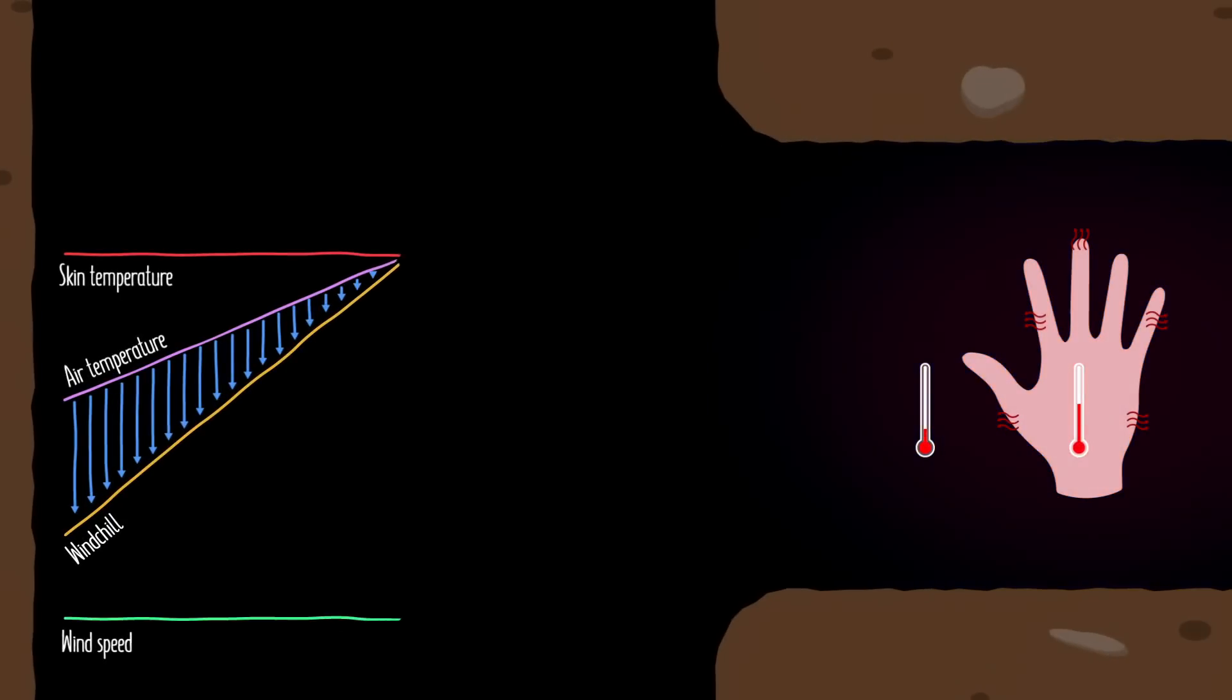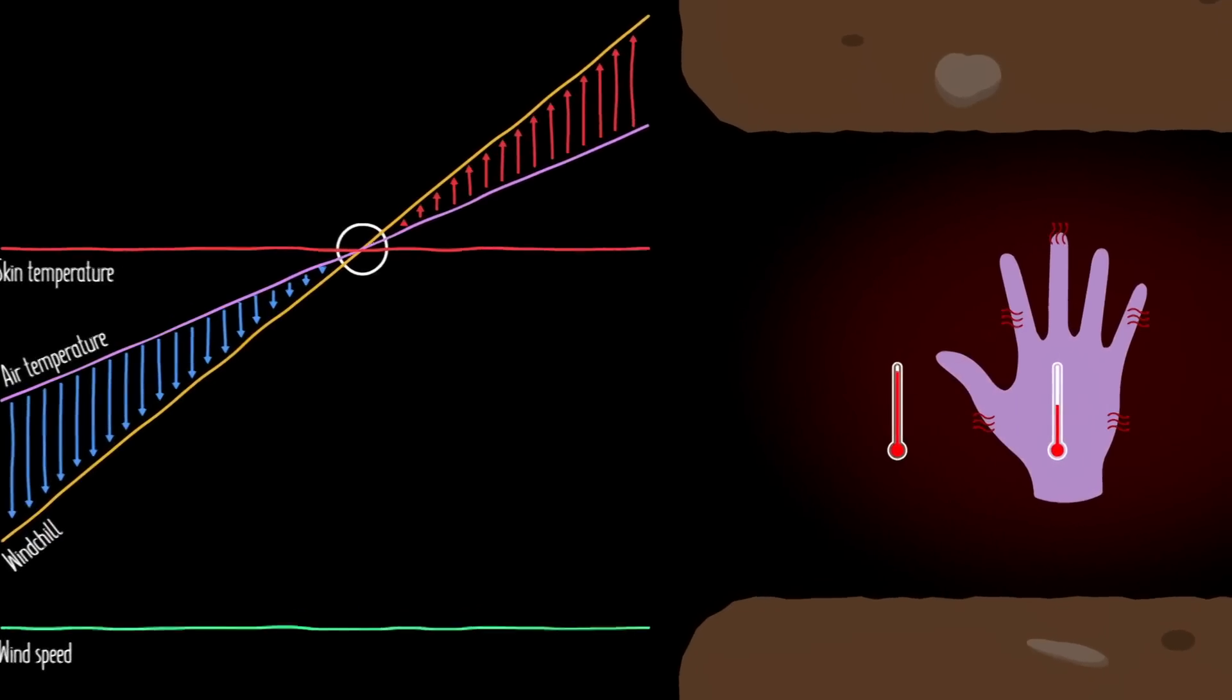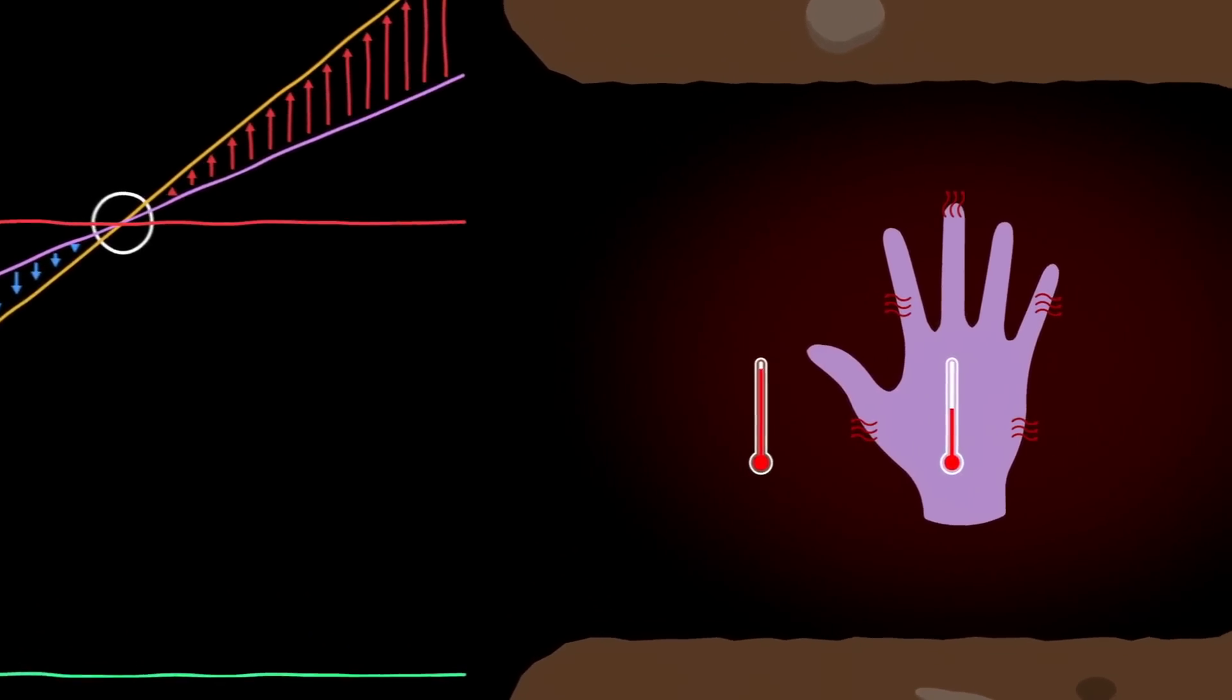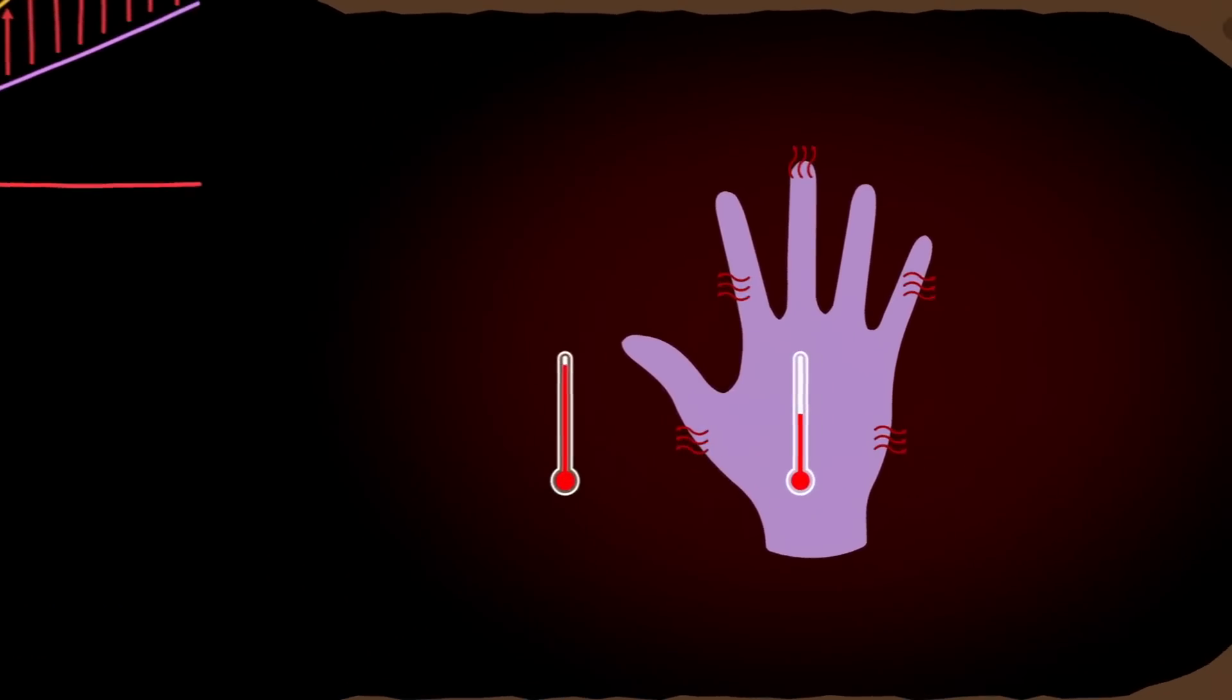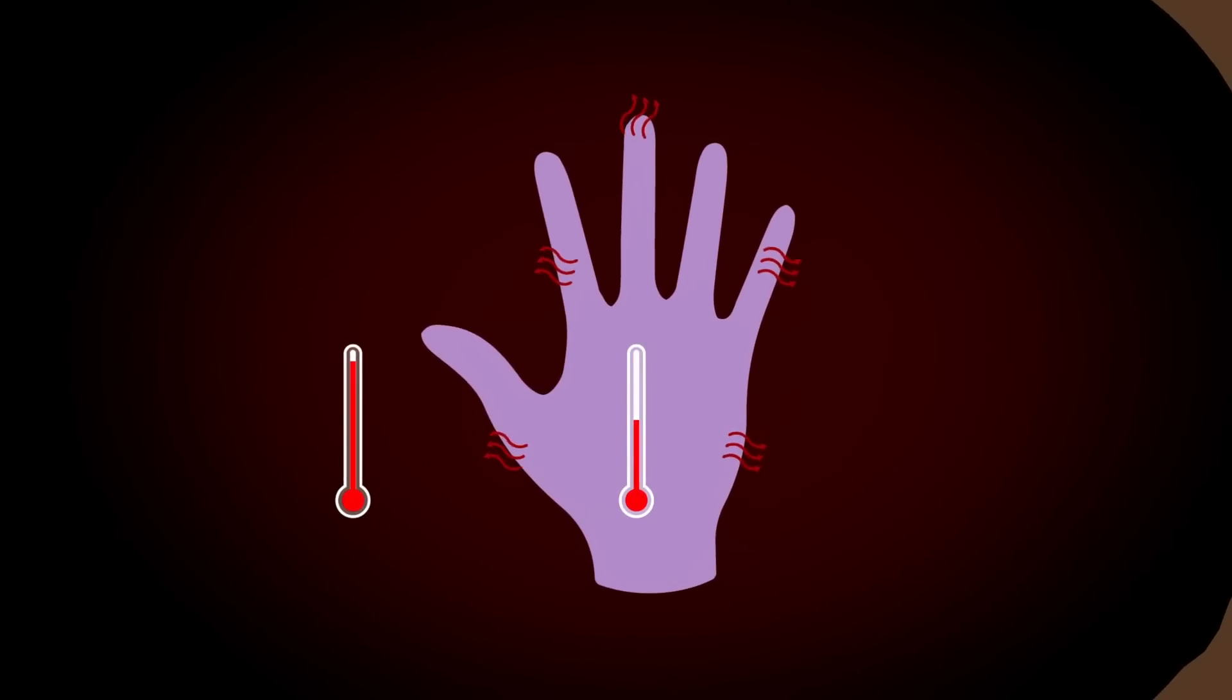Well, if the air becomes warmer than our skin, the windchill actually flips and starts having a warming effect. Because remember, heat energy always transfers from fast-moving particles to slow-moving particles, or from hot to cold. So, in that case, our body would collect heat from the air, leaving us surrounded by a slightly cooler layer. And then, when the wind blows, it moves those cooled particles away and replaces them with more warmed particles, which in turn allows our skin to collect even more heat energy.